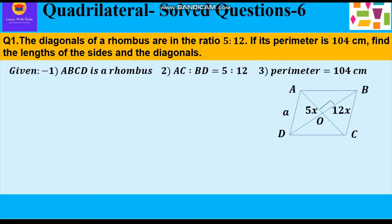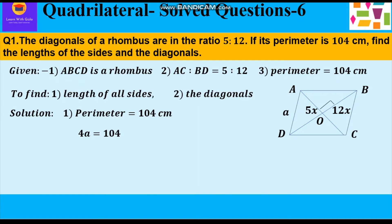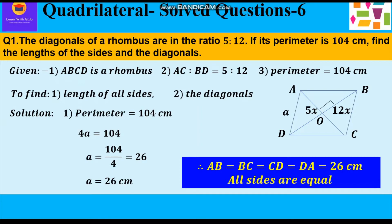Given: ABCD is a rhombus. The diagonals AC to BD are in the ratio 5 is to 12, and perimeter is 104 cm. We have to find the length of all the sides and the diagonals. Since perimeter is the sum of all sides and in a rhombus all sides are equal, we can say 4a = 104, so a = 104 ÷ 4 = 26 cm. Therefore AB = BC = CD = DA = 26 cm.